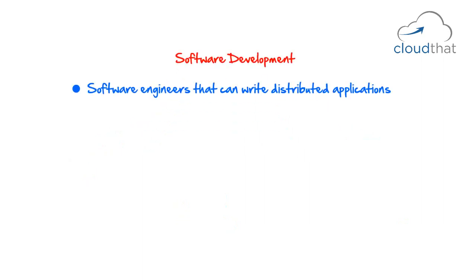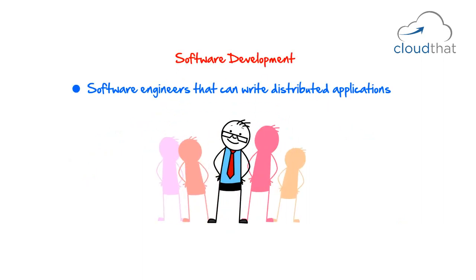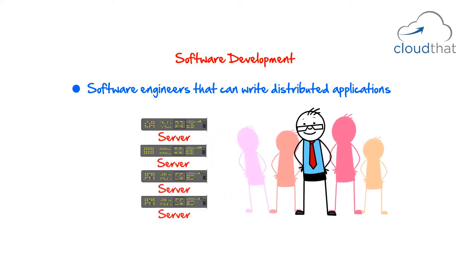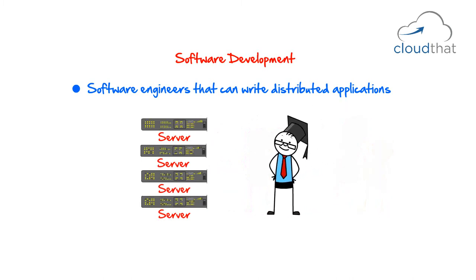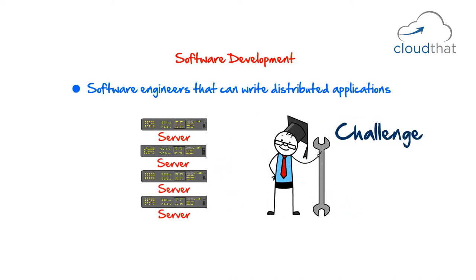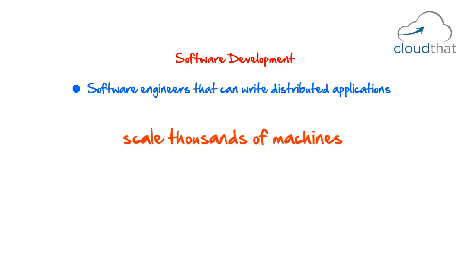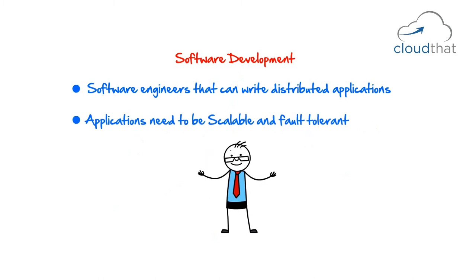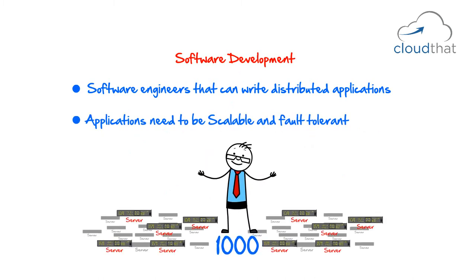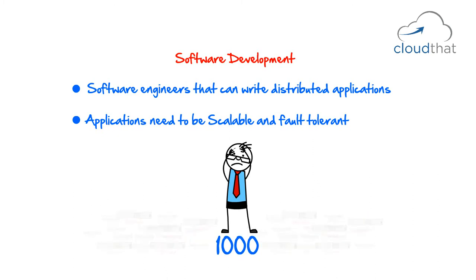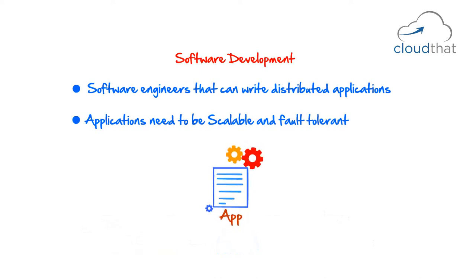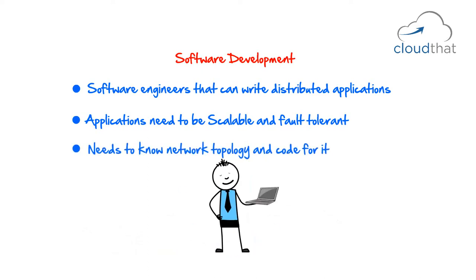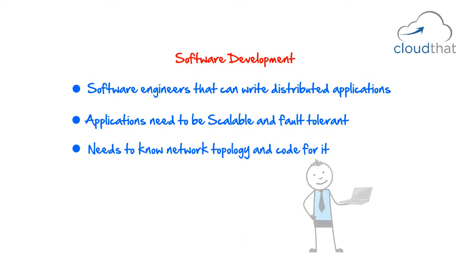For software development, you will need engineers who can write distributed applications that can run on multiple servers — a skill set not usually taught in colleges but acquired through actual work. There is some challenge in finding developers who can write applications that scale across thousands of machines. Your applications need to be scalable and fault tolerant. When you have thousands of servers, due to annual hardware failure rates, something is always bound to fail, and applications must be coded keeping this in mind. Developers also need to know network topology and code for it.